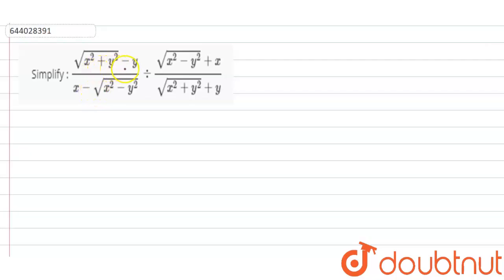Hello everyone. Simplify: root of (x² + y²) minus y, upon x minus root of (x² - y²), divided by root of (x² - y²) upon x, upon root of (x² + y²) plus y.